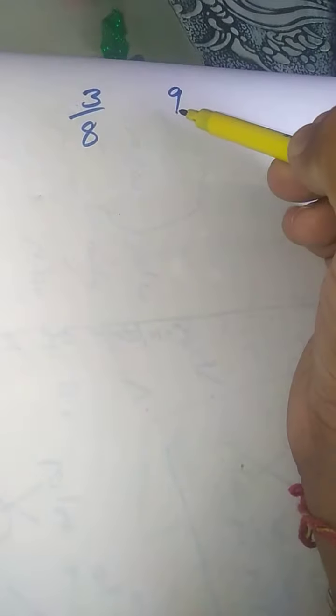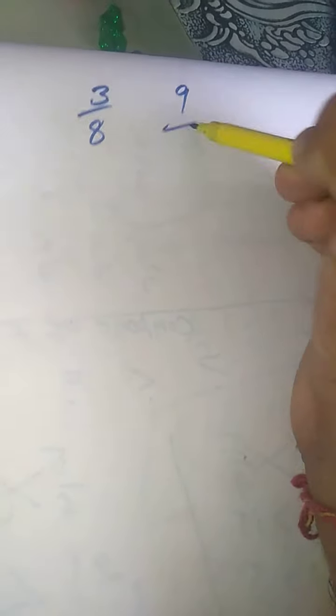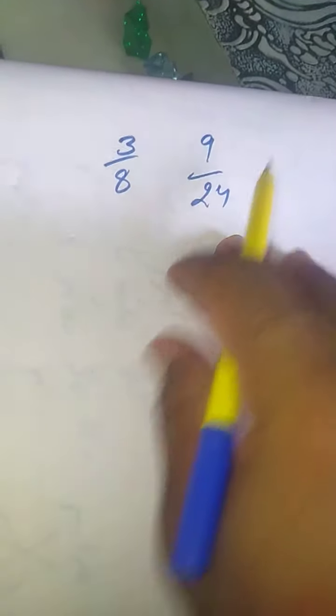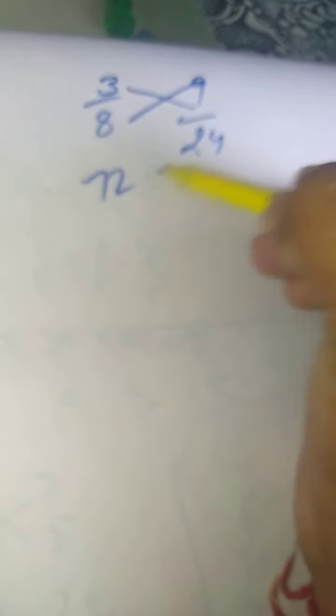Equal fractions भी आ सकती हैं। जैसे 3/8 and 9/24 — cross multiply करेंगे: 3 × 24 = 72 and 8 × 9 = 72। दोनों equal आए, so दोनों fractions equal हैं। Thank you।